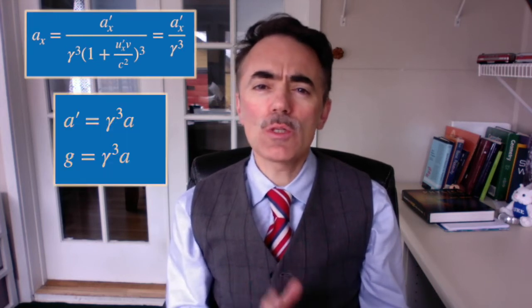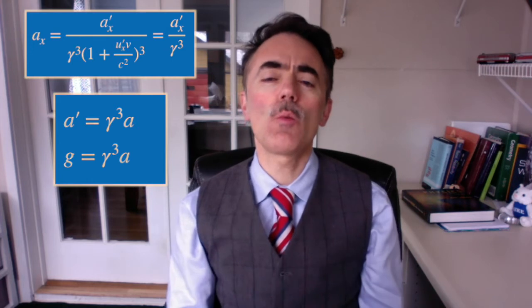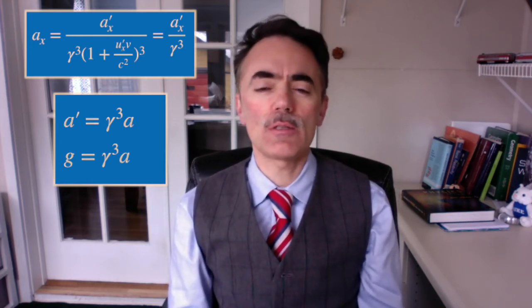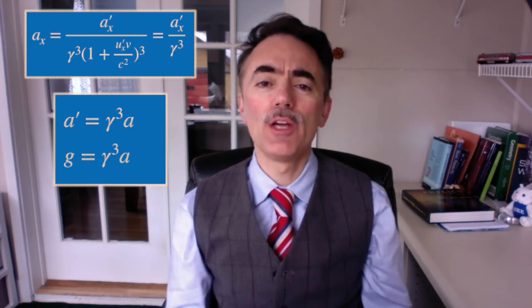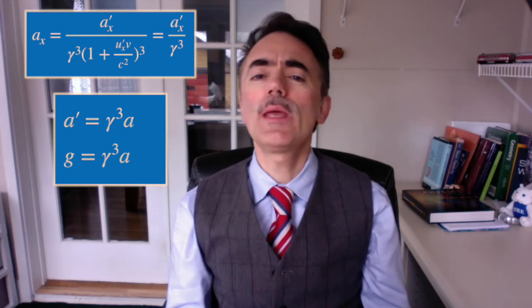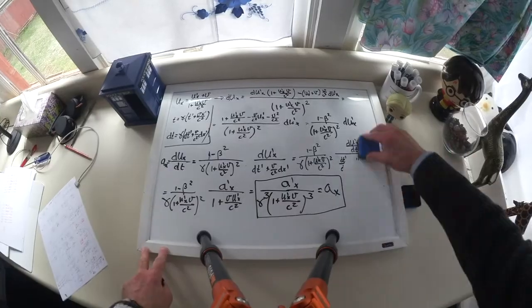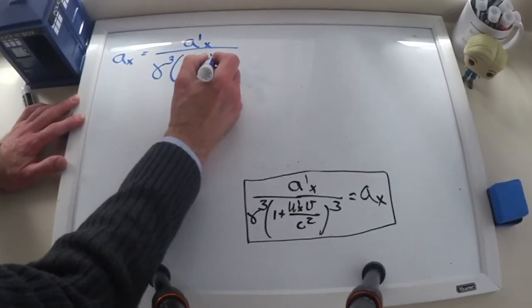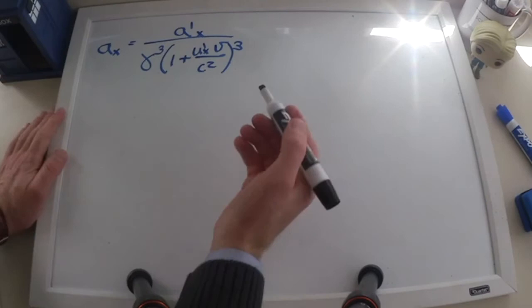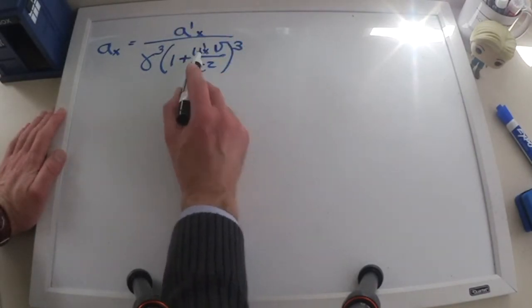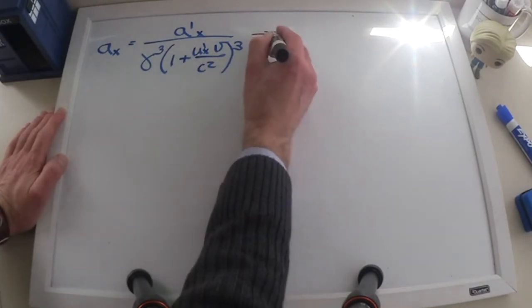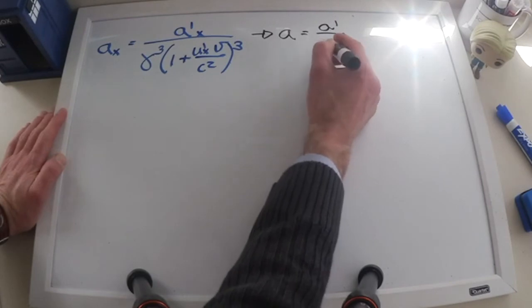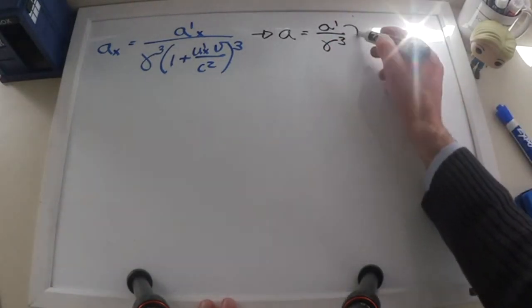So the velocity of each frame is v, which changes because of the acceleration. Then we can go back to our previous result where u prime x is zero and a prime is constant, equal to g in our case. We have that a prime is equal to gamma cubed times a, where a is the acceleration we measure from Earth, a prime is the constant acceleration that the astronauts experience, and gamma changes because v is changing. We can integrate this expression. Because we know that we are moving on the x-axis, I will just drop the x sub-index, and because in this case u prime x is going to be zero, I can write that the acceleration is just a prime over gamma to the power of 3. Remember that a prime is a constant.